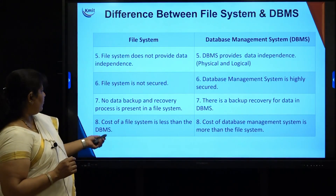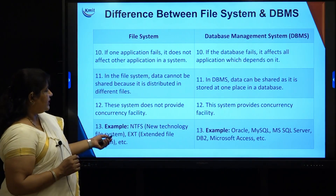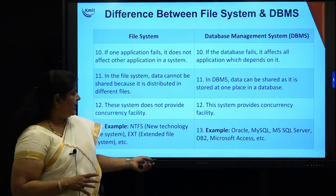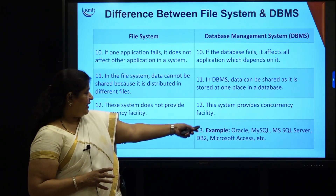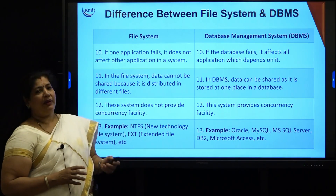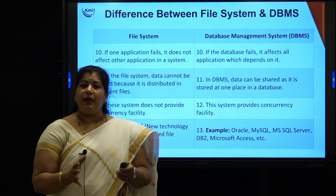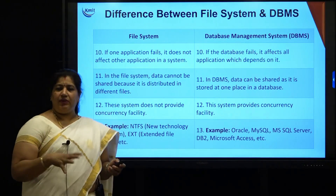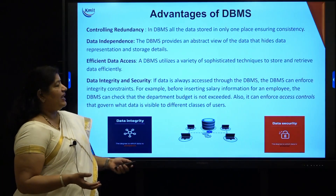Examples of file systems include NTFS — the New Technology File System — or extended file systems, depending on the operating system being used. Examples of DBMS include Oracle, MySQL, SQL Server, DB2, and Microsoft Access. These are the basic concepts of how the file system worked and the differences between the file system and DBMS.